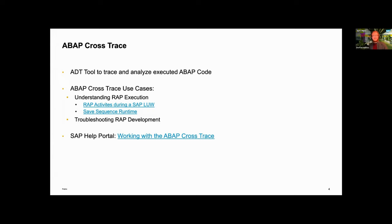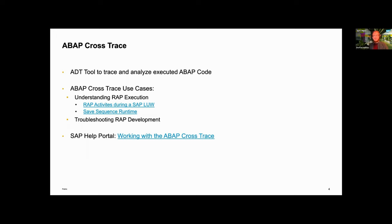It's integrated in ADT and you can use it to trace and analyze executed ABAP code. There are two big use cases we want to emphasize. The first one is understanding execution — if you're new to RAP or want to deepen your knowledge and want to know where your code is and how it's called. This can easily be done by utilizing the ABAP Cross Trace to track down your BO interaction or even interaction with other RAP BOs.